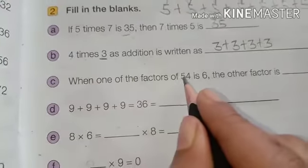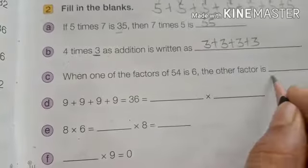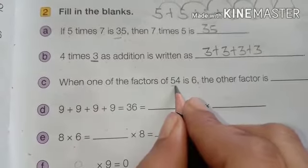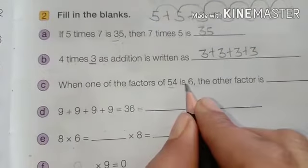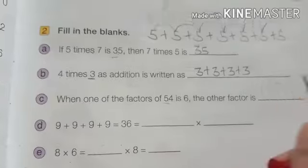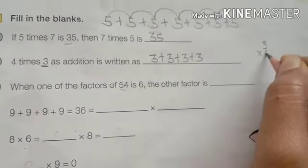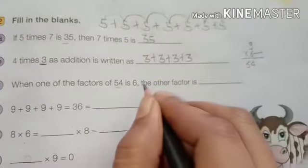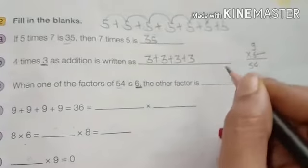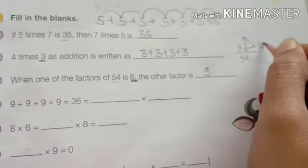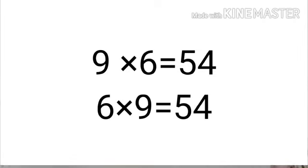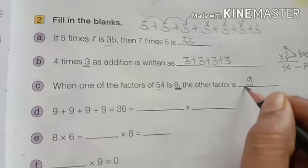When one of the factors of 54 is 6, the other factor is what? Now we have to find the factors. We know that in which table 54 is coming on place 6. Means we can do here 6 9's are. Means here 6 already written, now we can write 9's. This both is called as the factor and this is our product. Means answer is what? 9.